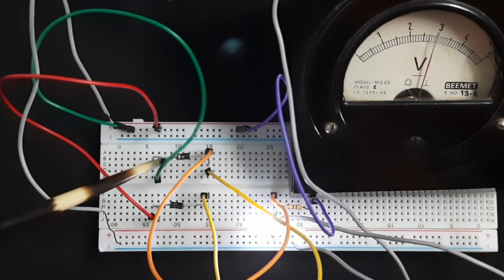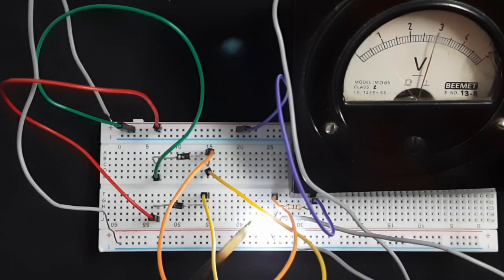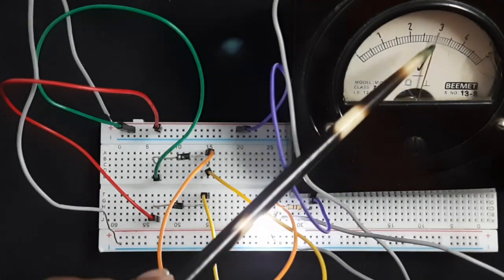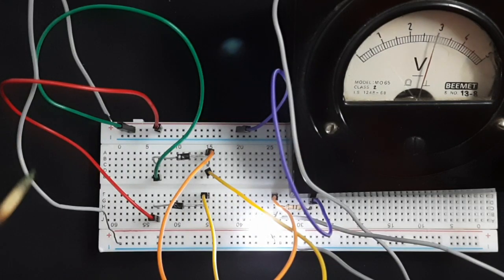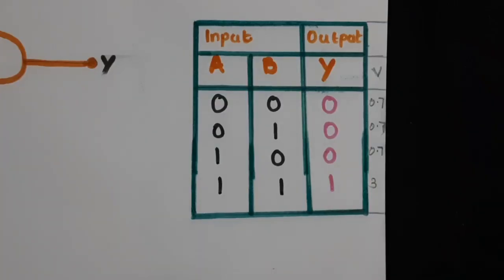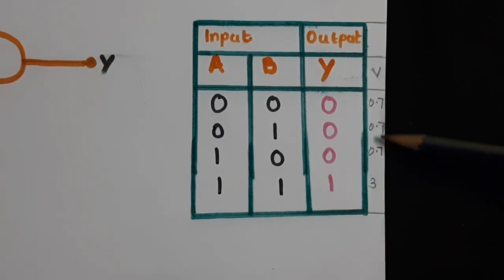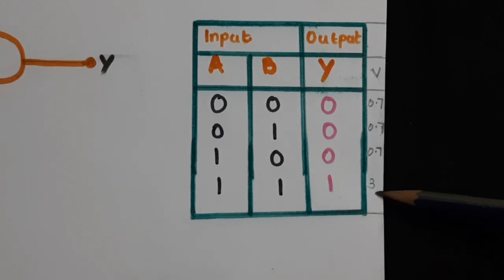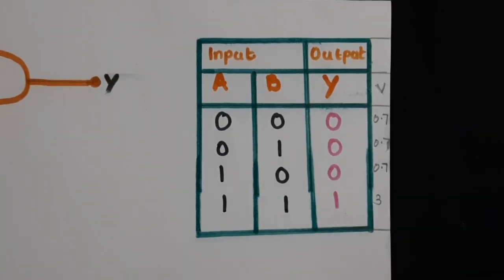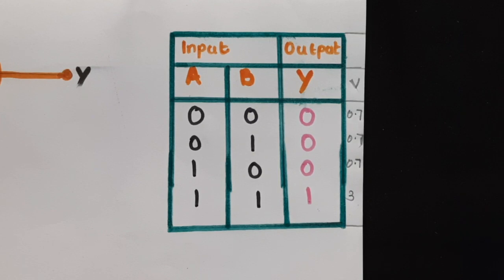Now the last condition: A is high and B is also high. The output is also high — that is why the LED is glowing and on the voltmeter the high state is denoted by 3 volt. So input 1, 1 — the output is also 1 and the voltmeter reads high. The truth table can be extended with voltmeter readings: the 0 state refers to 0.7V low and the 1 state corresponds to 3 volt. To conclude, the AND gate gives a high output only when both inputs A and B are high — more generally, an AND gate gives high output only when all inputs are high.